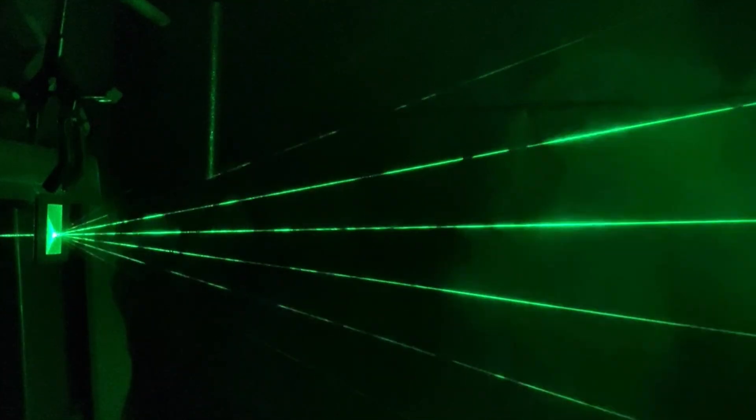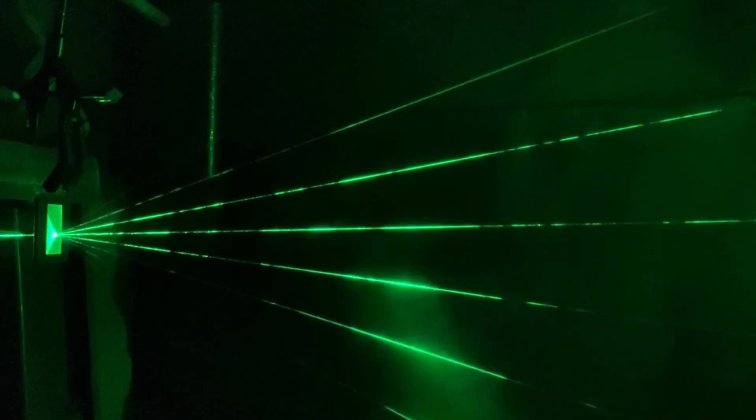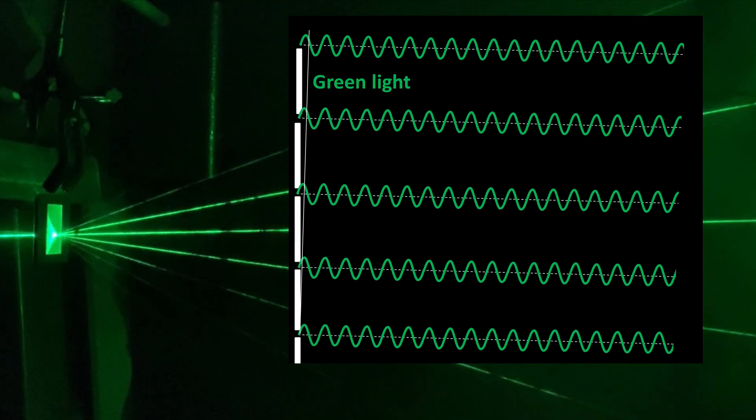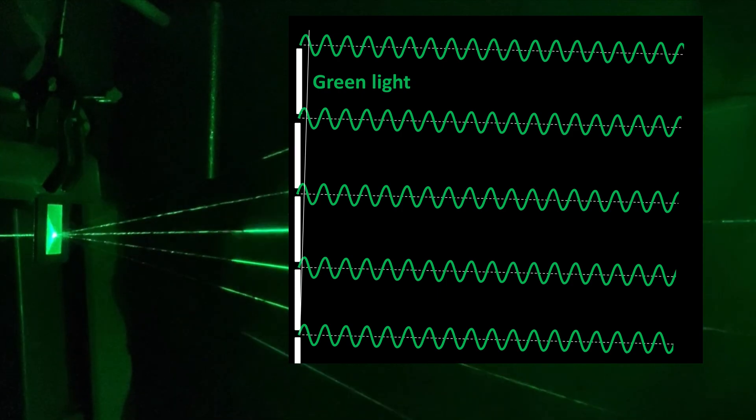Next, why do we get this region with no light between the zero and first-order beams? Well, at a small angle out from the center, the waves from adjacent slits have a small path difference of a fraction of a wavelength, meaning that one of them has to travel a little bit further than the other one.